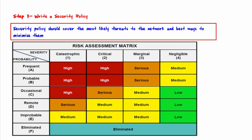A different risk might be estimated to cost five thousand dollars each time it occurs and it may be likely to occur seven times a year, so that risk would cost thirty-five thousand dollars on a yearly basis. It would make sense to give a higher priority to the second risk and spend more money and time on it. If a risk has a very small dollar amount and it's not likely to occur very often, then you might decide to simply forget about that risk altogether.